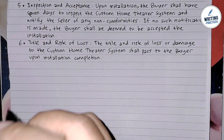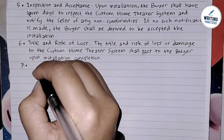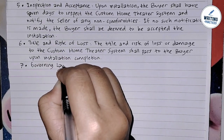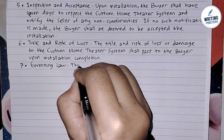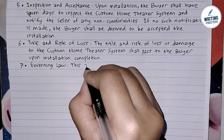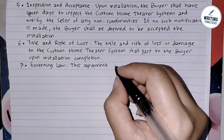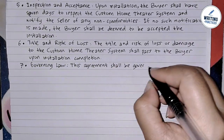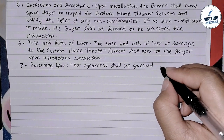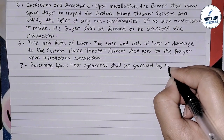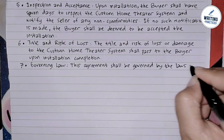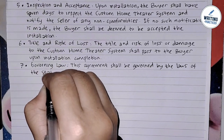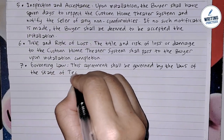In point seven, specify the governing law — which jurisdiction's laws will govern the agreement. This is important for legal clarity, especially if the buyer and seller are in different states or countries. For example: '7. Governing Law: This agreement shall be governed by the laws of the State of Texas.'